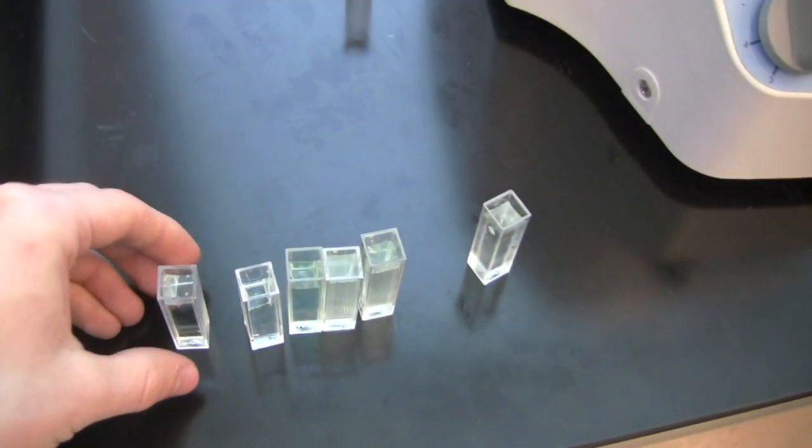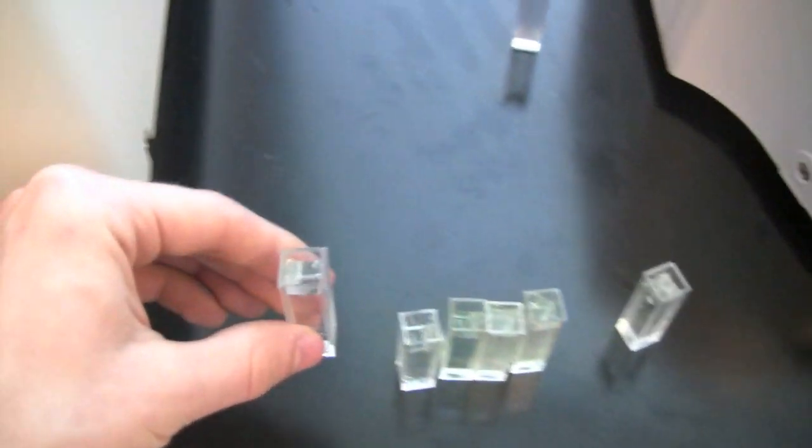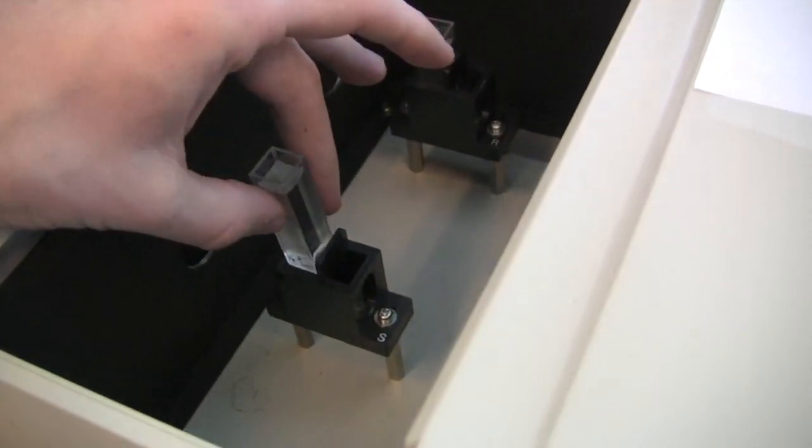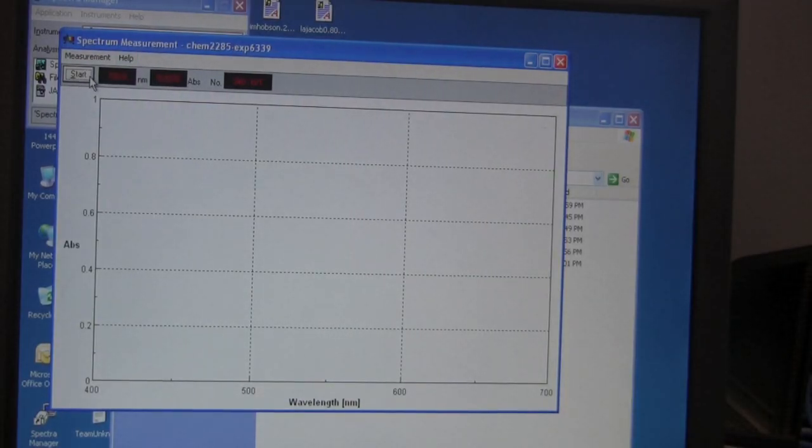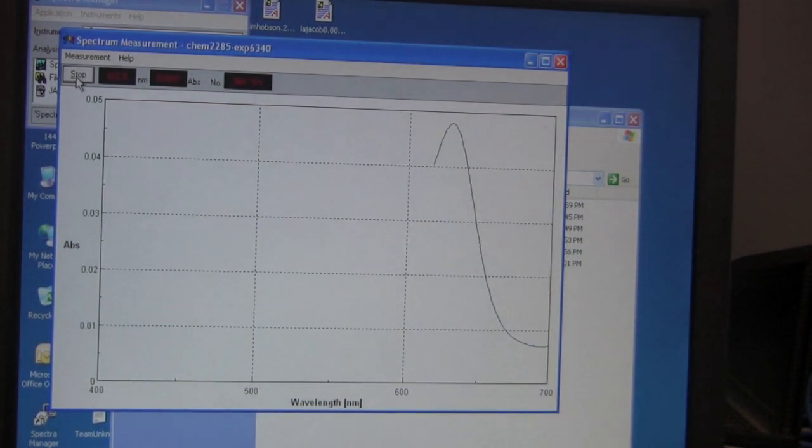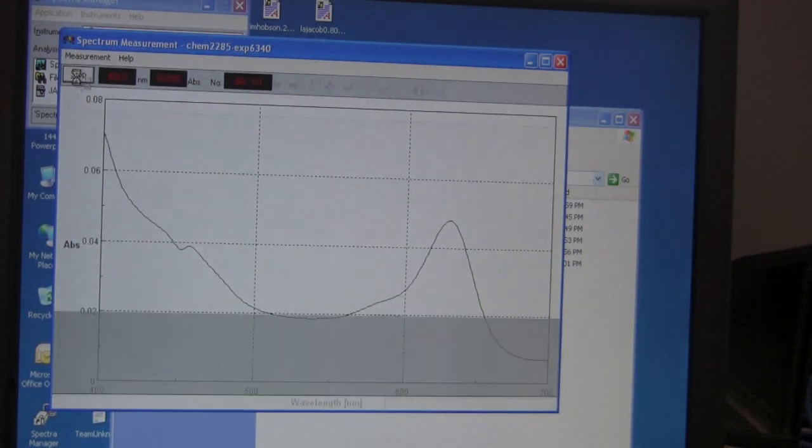Take the first cuvette which should have 0.2 over 25 milliliter concentration solution. Place the clear side facing the direction of the beam of light. Close the hood and with the spectrophotomanagement program, click the start button and allow the program to measure the absorbance versus the wavelength of the substance that you put in the spectrophotometer.